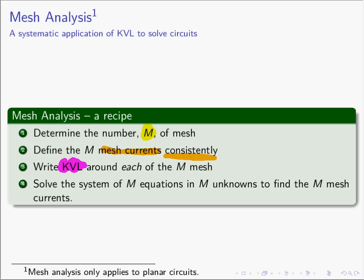Next, take each of those M mesh and write KVL around each of them. Remember, mesh is a loop, so there is a KVL equation for each mesh. We have M equations and M unknowns, and we will solve. When we solve that, we will find M mesh currents — the currents flowing in the mesh. With those M mesh currents found, you can find any current, voltage, power, or energy in the circuit.